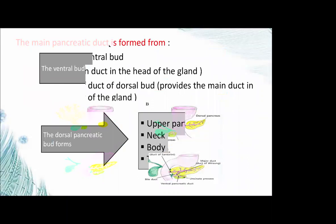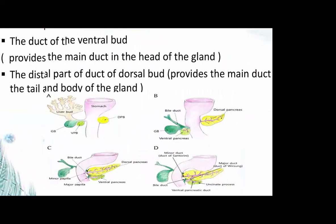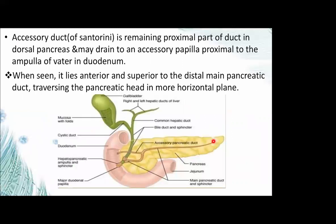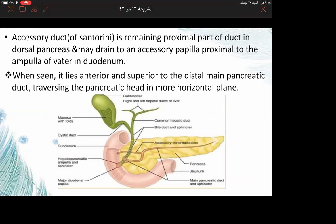The main pancreatic duct is formed from the duct of the ventral bud joining the main duct of the dorsal bud to provide the main duct in the tail and body of the gland. When the ventral pancreatic bud unites with the dorsal pancreatic bud, they form the main pancreatic duct. The main pancreatic duct begins in the tail, traverses toward the head, and turns inferiorly and somewhat posteriorly to join the common bile duct, opening into the major papilla.